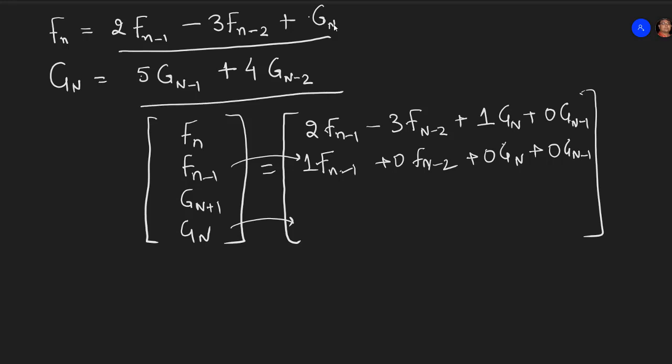Third term we will use the expansion from here. That means it is 0 times F of n minus 1 plus 0 times F of n minus 2, there is no dependency on F, plus 5 times G of n minus 1, so it is n minus 1 plus 4 times G of n minus 2.